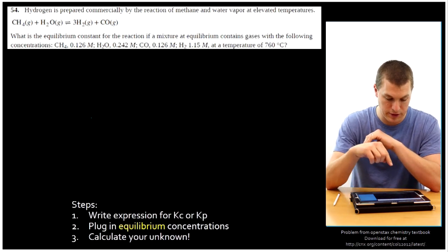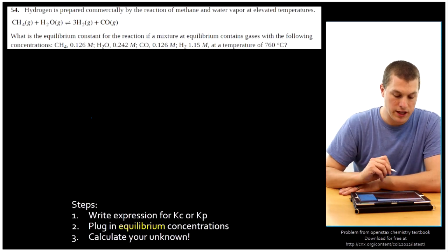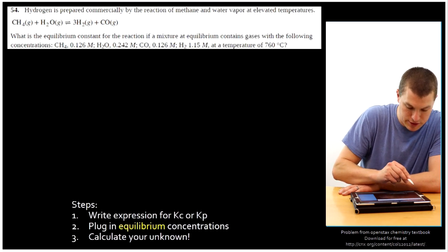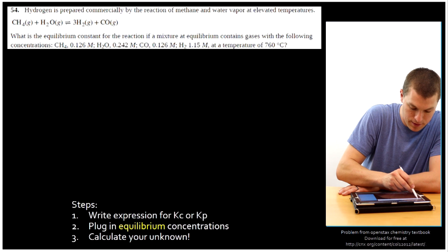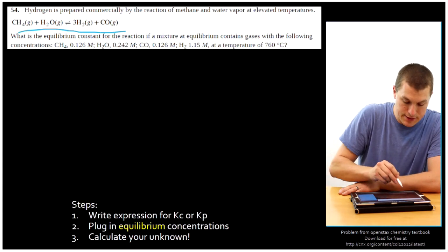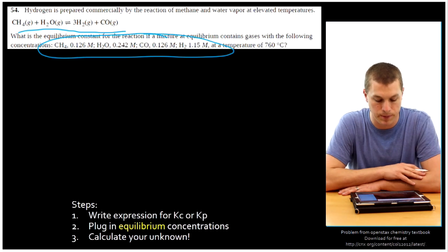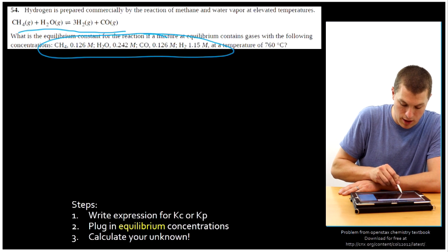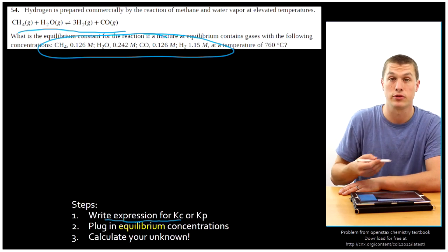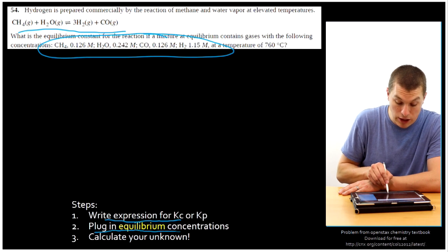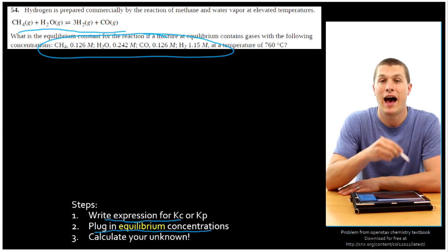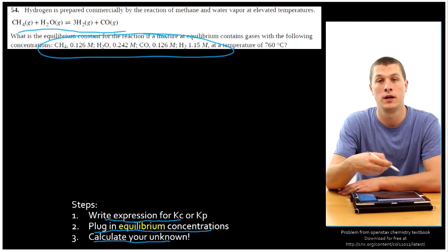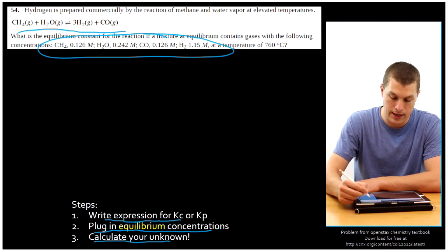This is from the kinetics chapter, problem number 54. We're given a bunch of equilibrium concentrations — we can make hydrogen from this reaction, and it tells us all the concentrations at equilibrium. All we have to do to calculate the equilibrium constant is write our expression for Kc, plug in our equilibrium concentrations — importantly, these are the concentrations when the reaction has run to equilibrium — and then calculate our unknown.